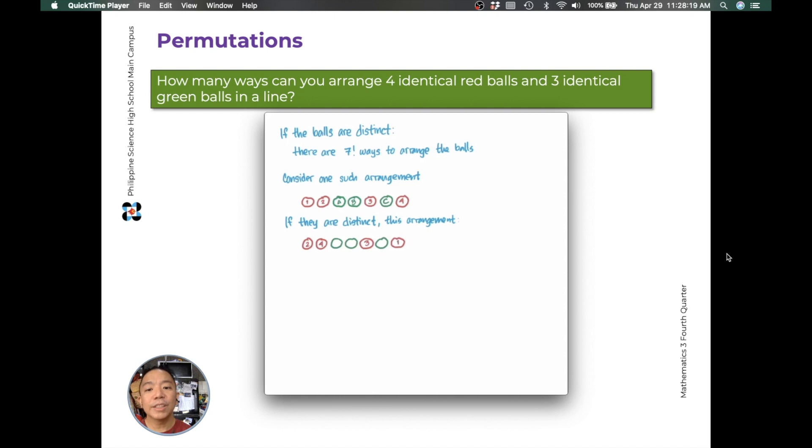So, instead of red 1, red 2, green A, green B, red 3, green C, and red 4, this is red 2, red 4, green C, green A, red 3, green B, and red 1. So, if they are distinct, then 7 factorial ways to arrange them.